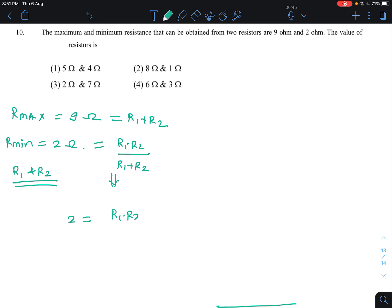So 2 is equal to R1 R2 divided by 9. So R1 into R2 will become 18.